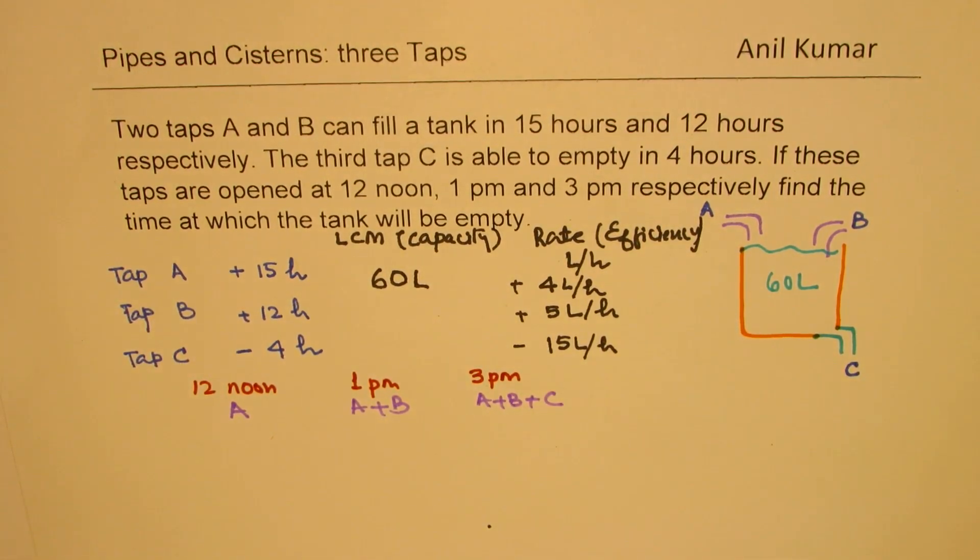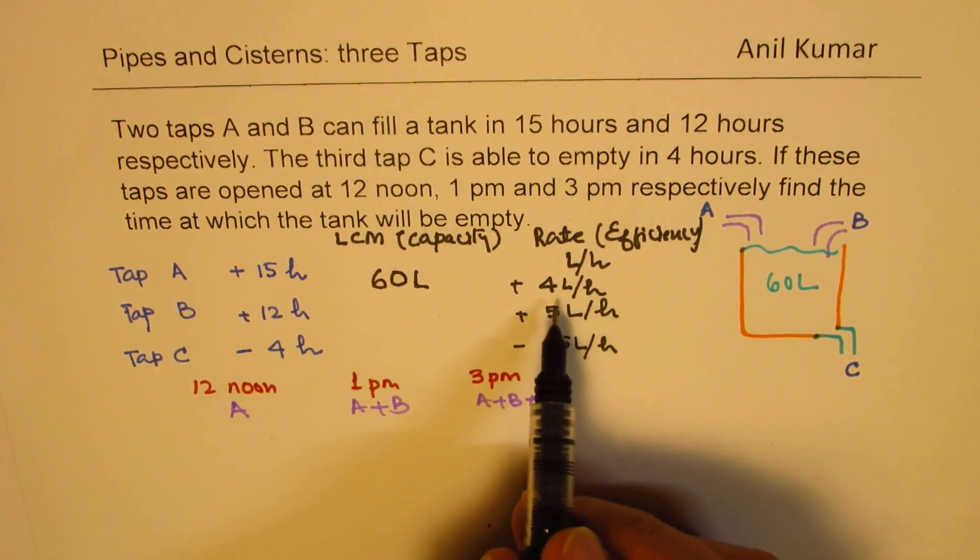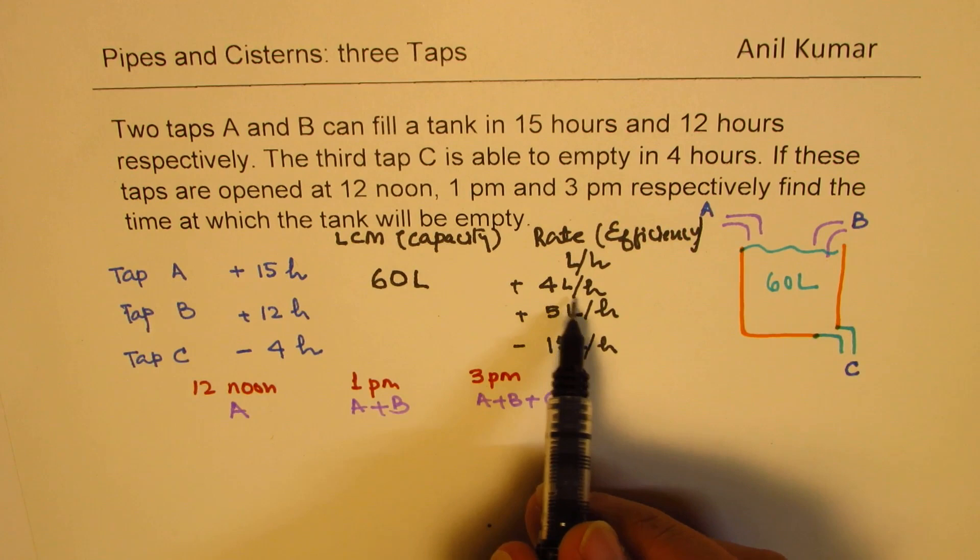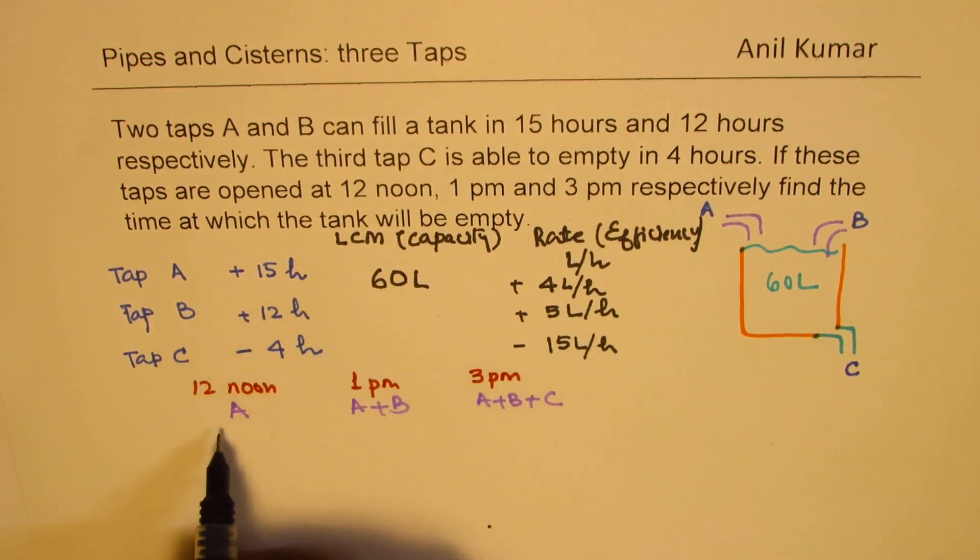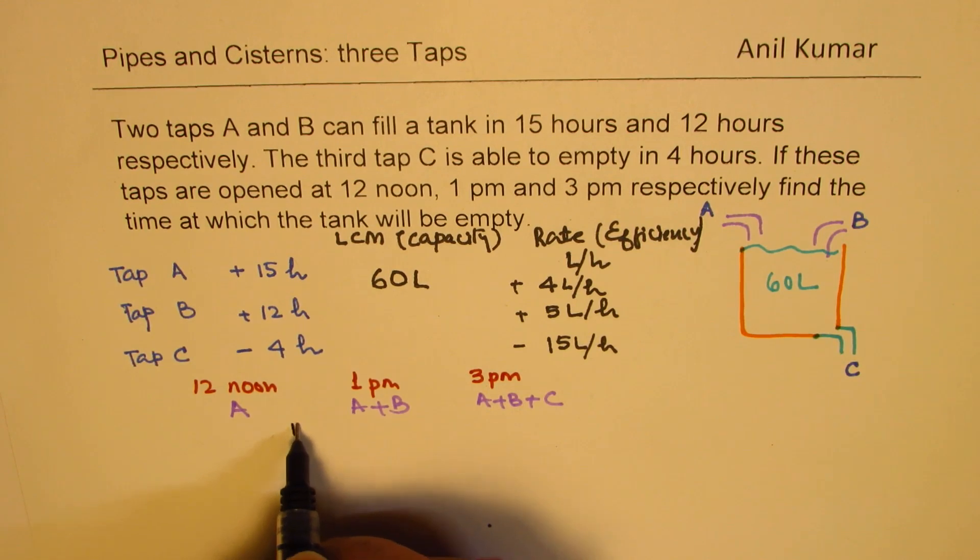Now, if A works for 12 to 1 p.m., in that case, up to this time, it will fill in 1 hour, 4 liters. So tap A, which works for 1 hour, gives you 4 times 1, that is 4 liters.